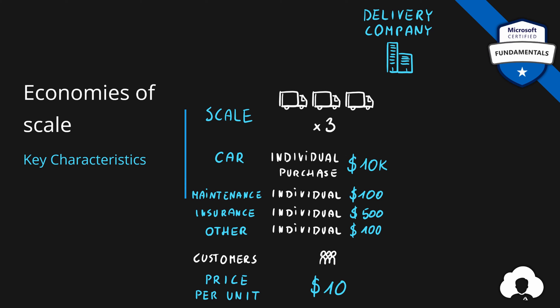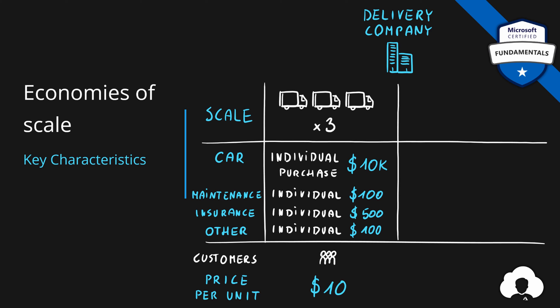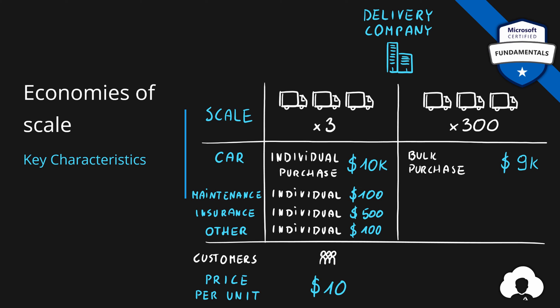Let me explain what happens if your company grows in size — if your scale goes from 3 cars to, for instance, 300. Because your company is already big, you might be able to buy your cars in bulk from the dealership at a discounted price, instead of buying them for $10,000 maybe buying them for $9,000. Again for maintenance, you will be able to sign a contract with a car repair shop, lowering the price of the maintenance. The same goes for insurance because you can buy insurance in bulk. And if you have shared services and hire some additional staff to maintain your company, you will also be able to reduce the price per car required to run your company.